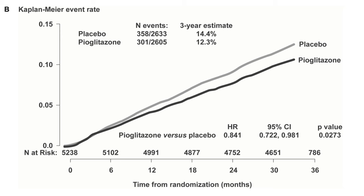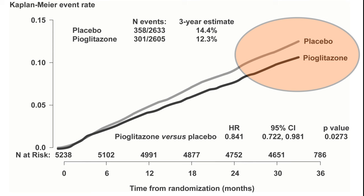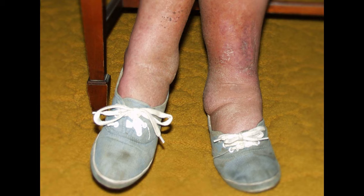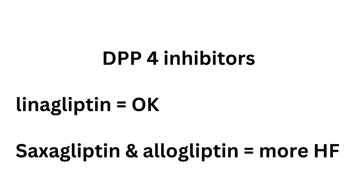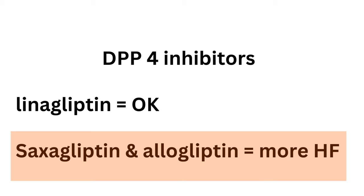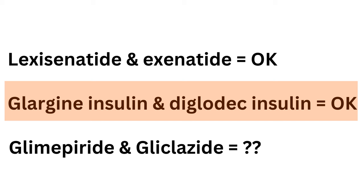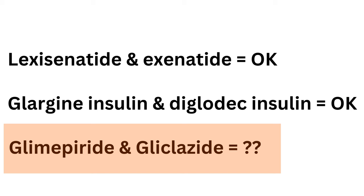For pioglitazone, one trial showed favorable cardiovascular outcomes, so it's reasonable to consider it to lower atherosclerotic cardiovascular disease risk in patients with type 2 diabetes and prevalent atherosclerotic disease. However, pioglitazone enhances fluid retention, especially with insulin or in renal dysfunction, and must be avoided in patients at risk for heart failure. Among DPP-4 inhibitors, linagliptin was neutral on cardiovascular outcomes, while saxagliptin and alogliptin increased the risk of heart failure hospitalization. Insulin glargine and degludec were both neutral in patients with high cardiovascular risk. Among sulfonylureas, glimepiride and gliclazide seem to have an acceptable cardiovascular safety profile if hypoglycemia is avoided.